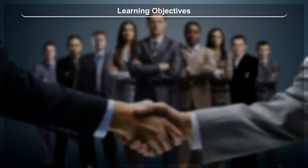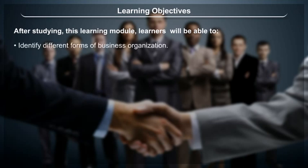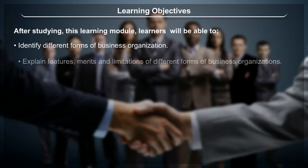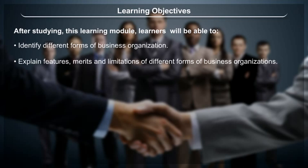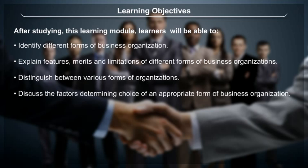Learning Objectives: After studying this module, students will be able to identify different forms of business organization, explain features, merits and limitations of different forms of business organizations, distinguish between various forms of organizations, and discuss the factors determining choice of an appropriate form of business organization.